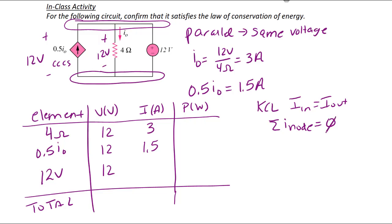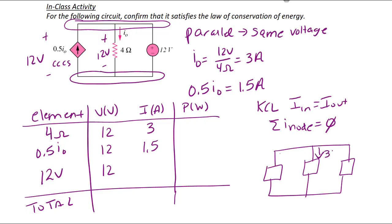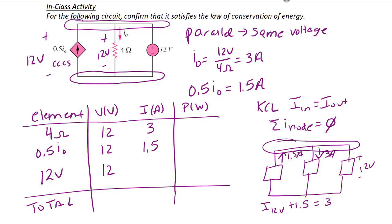KCL states that current in equals current out, or the sum of currents into and out of a node is zero. The current through the 12 volt source plus 1.5 must equal 3, so the current for the 12 volt source is 1.5 amps. Since that current flows into the negative terminal, its power is negative 18 watts. The 4 ohm resistor and 0.5 I0 source each contribute power, and the total power sums to zero — confirming the law of conservation of energy is satisfied.